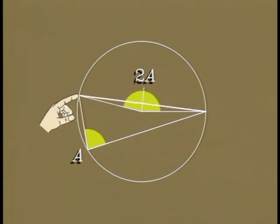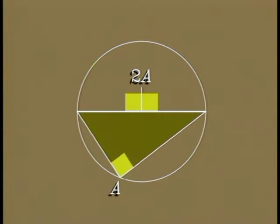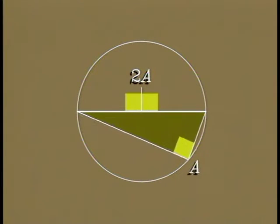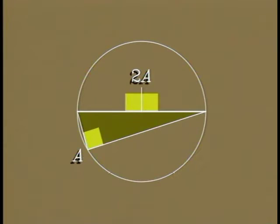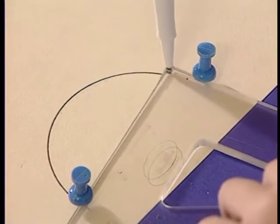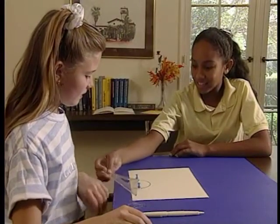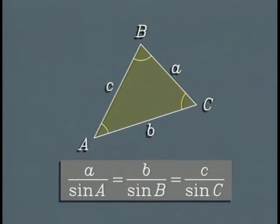Now let's look at the special case where the central angle is a straight angle. The chord is a diameter and the inscribed angle is half a straight angle, or a right angle. Therefore, any triangle inscribed in a semicircle with a diameter as one side is a right triangle and the diameter is its hypotenuse. So when you use angles to draw circular arcs and you want the two fixed points to be extremities of a diameter, use a right angle to trace out the arc.